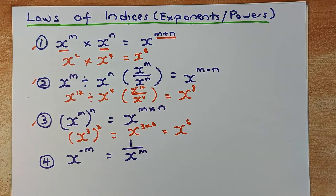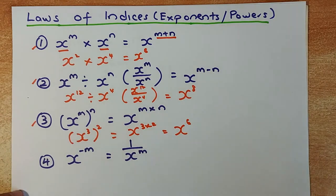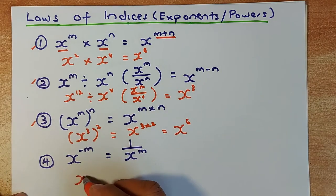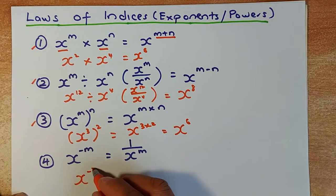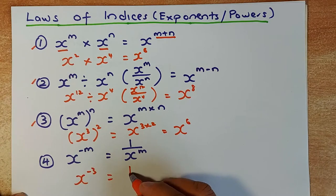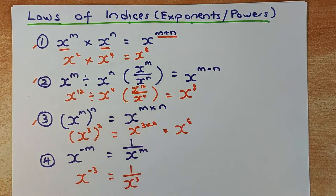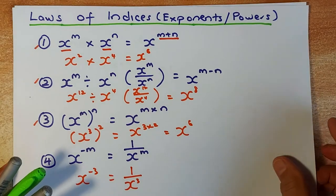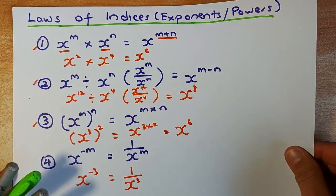The last law covers negative powers. Remember, all negative powers in your answers have to be converted to positive powers in NCEA Level 2. So x to the minus m — for example, x to the minus 3 — is just 1 divided by x cubed. Those are the 3 or 4 laws of indices you need to know.